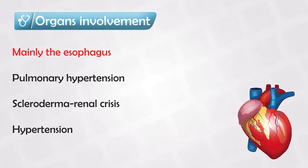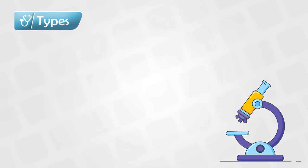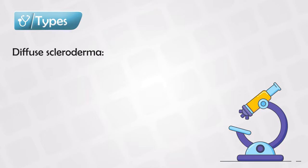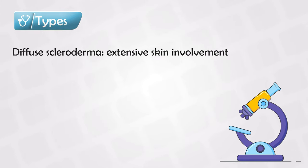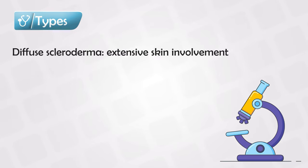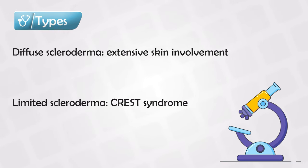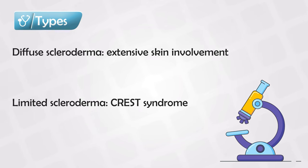Most of the patients tend to be females, with a ratio of 3 to 1. Scleroderma is subdivided into two classifications depending on skin involvement: diffuse scleroderma, where symptoms affect pretty much all of the skin, or limited scleroderma, where symptoms mainly involve the face and the hands.